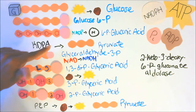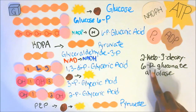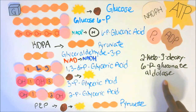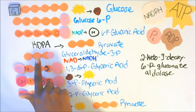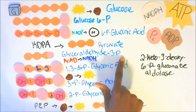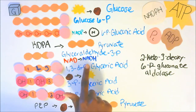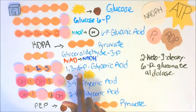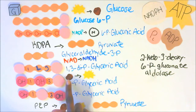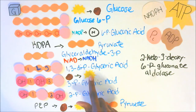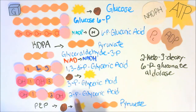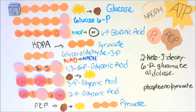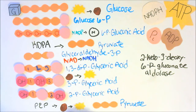Then we have KDPG, which is 2-keto-3-deoxy-6P gluconate aldolase. Then we have pyruvate. Next, we have glyceraldehyde-3-phosphate. Then we have a reaction where NAD turns into NADH. Our next molecule is 1,3-di-P glyceric acid. Then a reaction where ADP turns into ATP. Our next molecule is 3P glyceric acid, then 2P glyceric acid, then PEP — phosphoenolpyruvate. Then ADP turns into ATP, and finally our pyruvate.